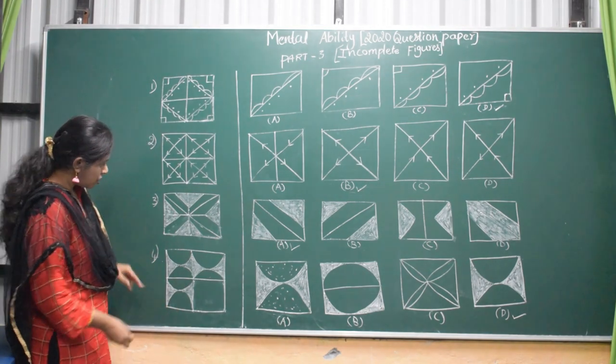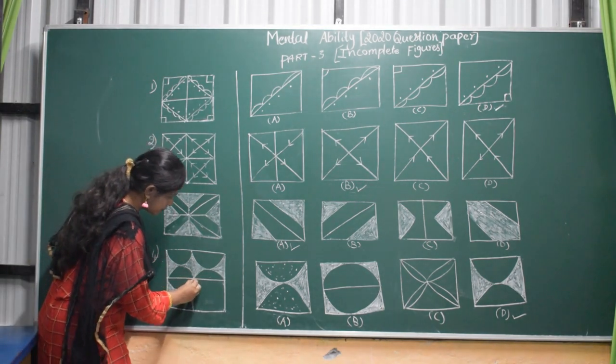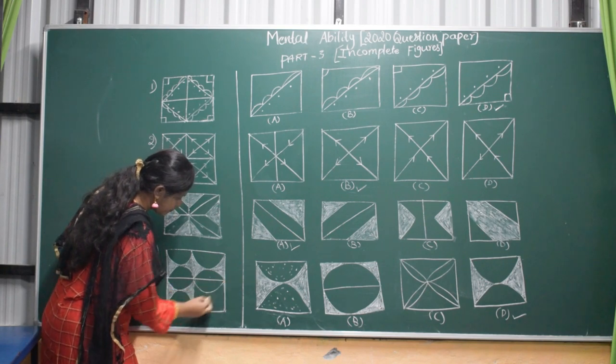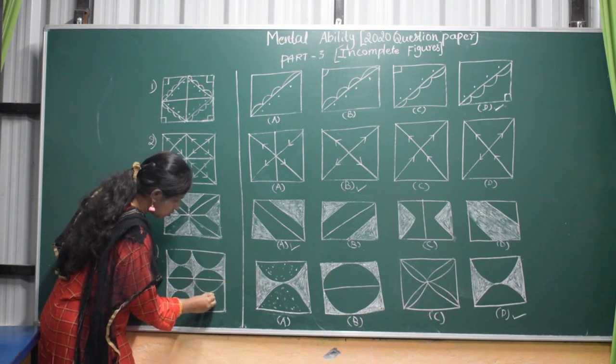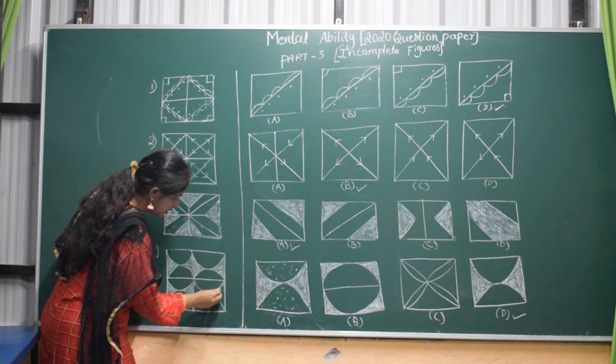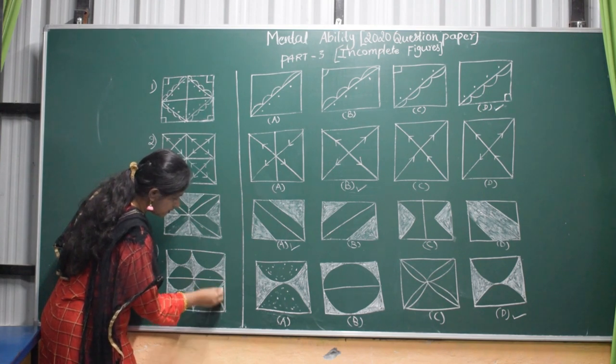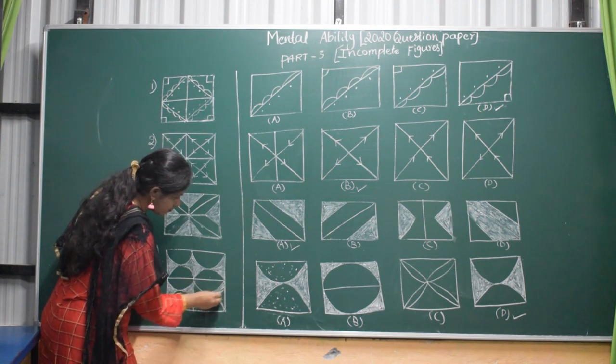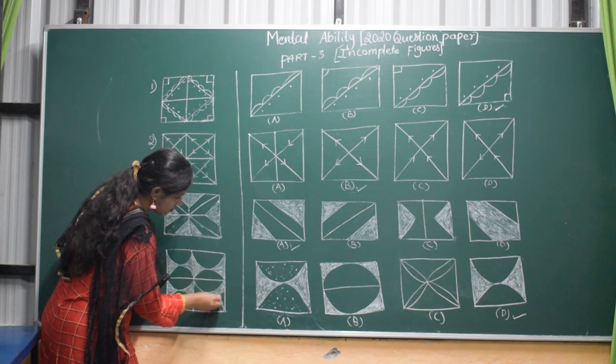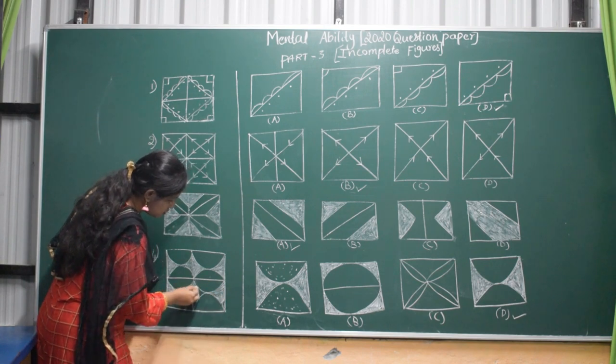Coming to 4th one. You draw 2 curves here, like this way. You draw 2 curves and shade it. Shade the 1 part. And here also you shade.